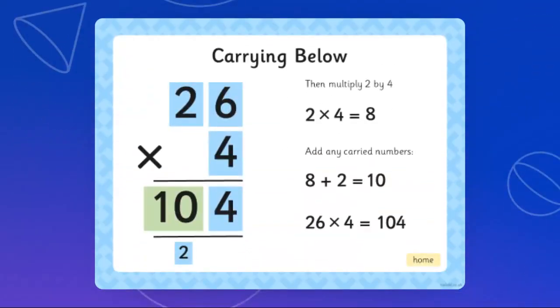Now once I multiply the 6 times 4, which is 24, I need to multiply my 2 times 4. So again I repeat, 6 times 4 is 24, which is 2, and then you put the 4 down. Then we multiply 2 times 4, which is 8 plus 2, which is 10. My answer is 104.